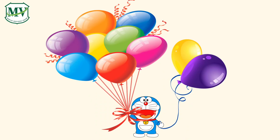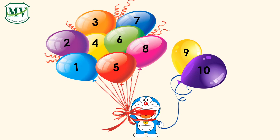How many colorful balloons does Doraemon have? Let's count. 1, 2, 3, 4, 5, 6, 7, 8, 9, 10 — there are 10 colorful balloons.